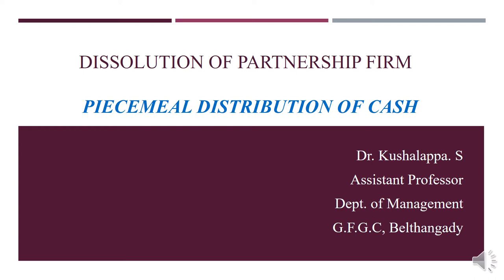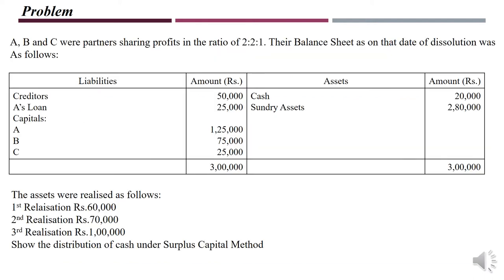Let us discuss some more problems related to dissolution of partnership cash distribution. In this problem, A, B, C are partners sharing profits in the ratio 2:2:1. Their balance sheet on the day of dissolution shows creditors 50,000, A's loan 25,000, and capital accounts on the asset side. The difference from the previous problem is that here we have two more liabilities — creditors and A's loan.